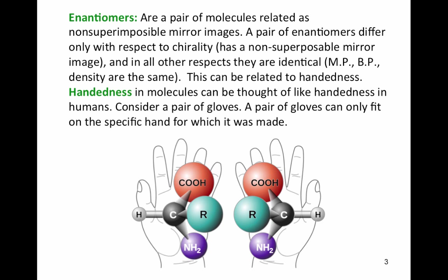Enantiomers are molecules related as non-superimposable mirror images. A pair of enantiomers differ only with respect to chirality. Looking at the carbon, if it has four different groups on it, it's said to be a chiral carbon — sometimes called a chiral center. There can be more than one chiral carbon in a molecule, so the word 'center' might be misleading. These two molecules, because they're mirror images with the same four different groups on each carbon but spatially different, are enantiomers.